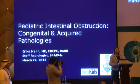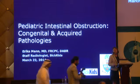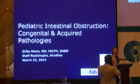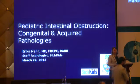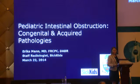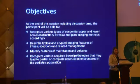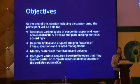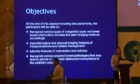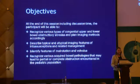So, pediatric intestinal obstruction — I've broken it down into some congenital as well as acquired pathologies, trying to keep things really simple. The idea is not for you to walk out of here with ten years of pediatric experience, but to go away confident that the decisions you make are the right decisions. The objectives are to look at various types, describe upper and lower types of bowel obstruction, understand typical and atypical features, identify features of malrotation and volvulus, and look at various other bowel obstructions in children.